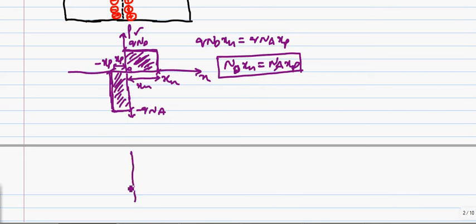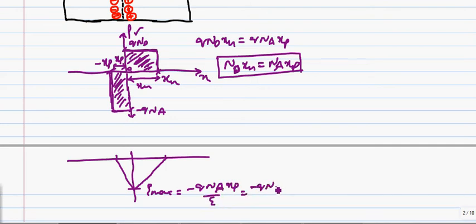Now, if this is the charge distribution, we have seen how this field distribution will be, I mean, electric field distribution. This is how it looks. And E_max, that is the maximum electric field, will be at the metallurgical junction, which is equal to q times n_a times x_p divided by epsilon, which is also equal to minus q times n_d times x_n over epsilon.